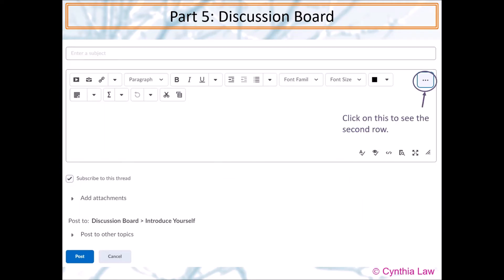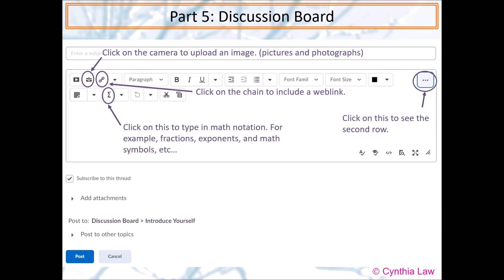Click on the three dots to see the second row of the options. If you want to include an image, click on the camera symbol and you can upload. If you want to include a website, click on the chain. If you want to type in math notation, then click on the sigma symbol. Once you're finished, click post so that everyone can see your message.